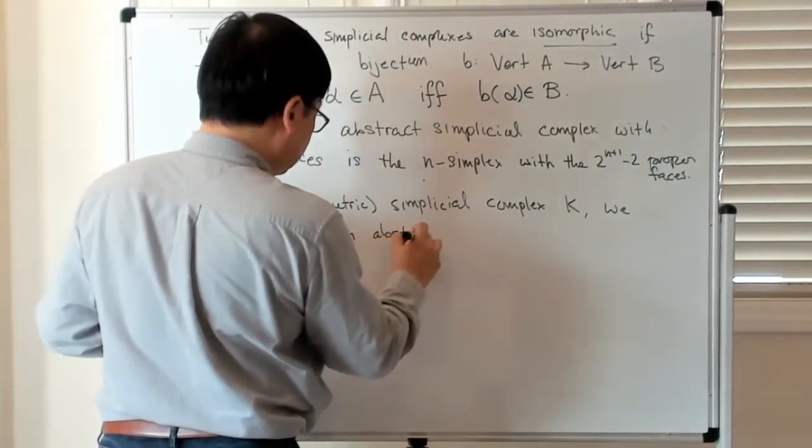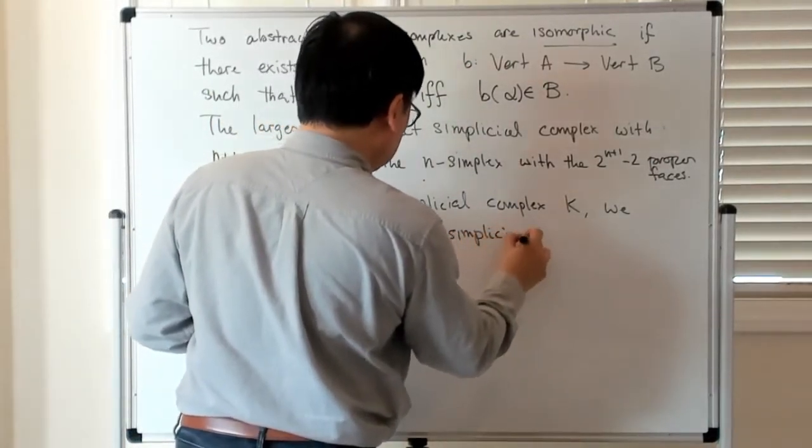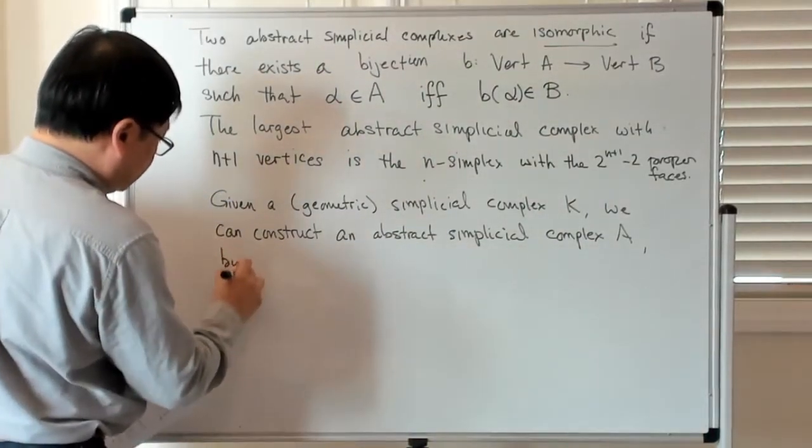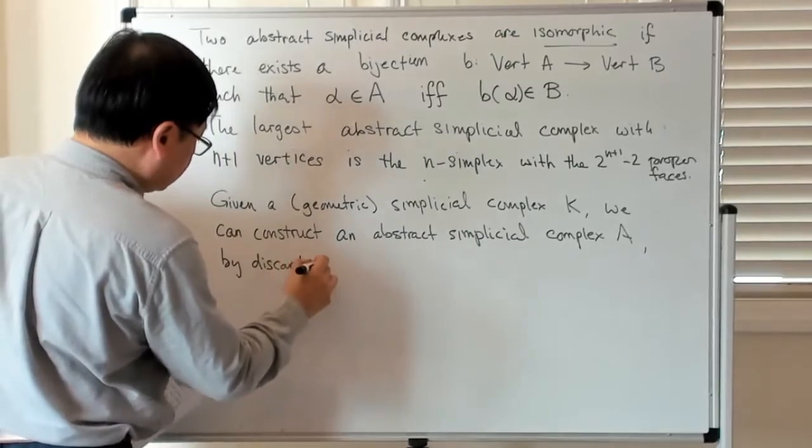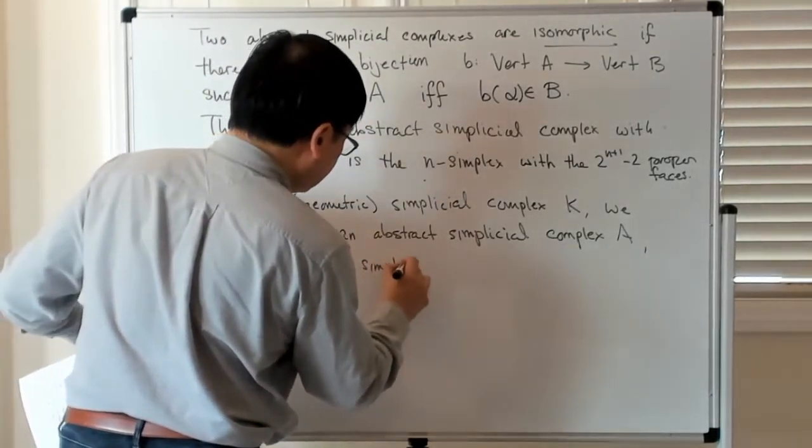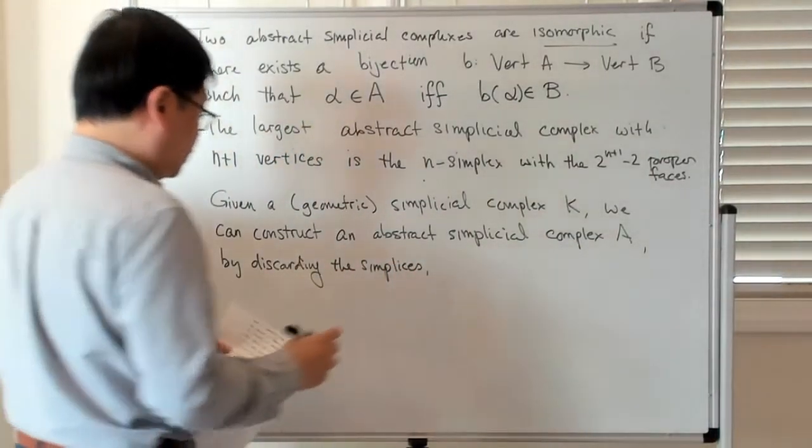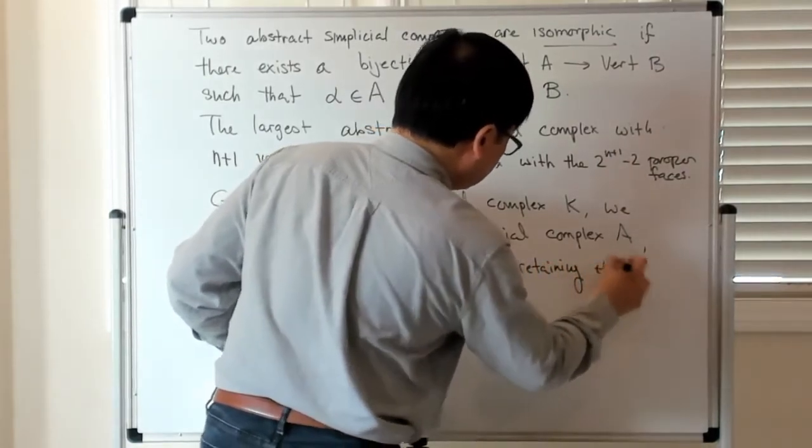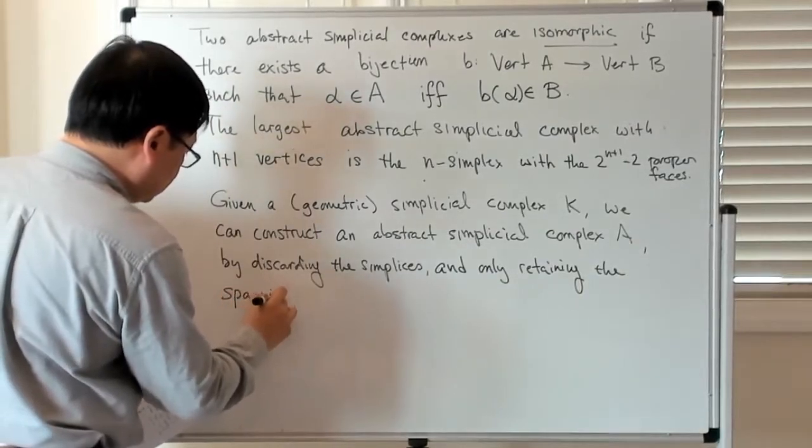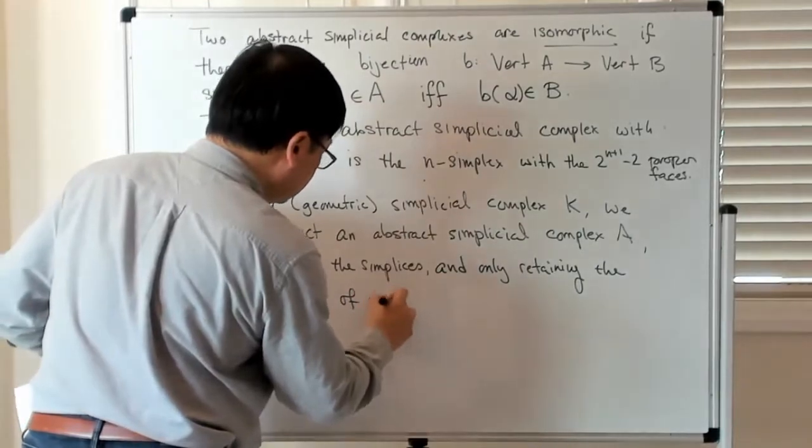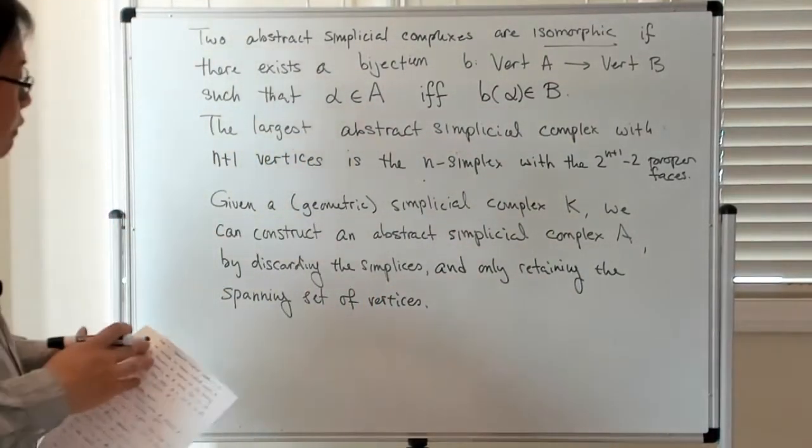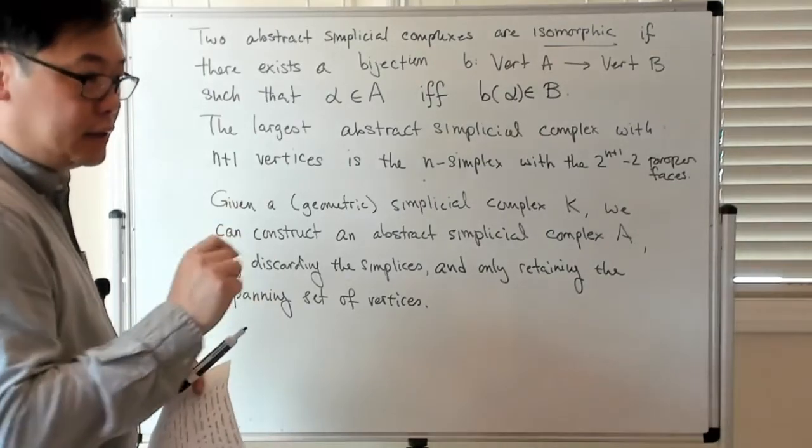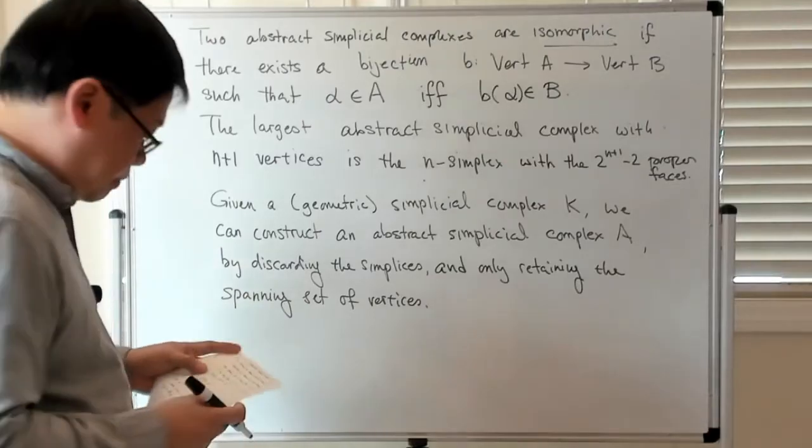By discarding the simplicies and then basically just retaining the spanning set of vertices. Basically, every time you have a simplex in your geometric simplicial complex, you throw out this convex hull and just replace it by this set which consists of the spanning set of vertices.